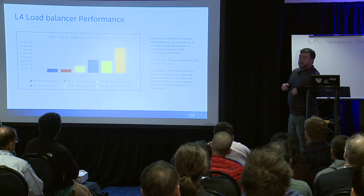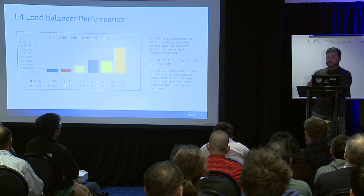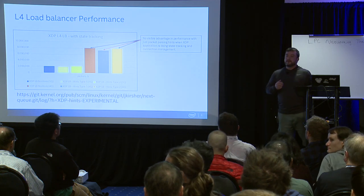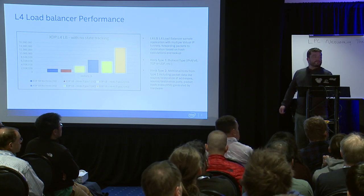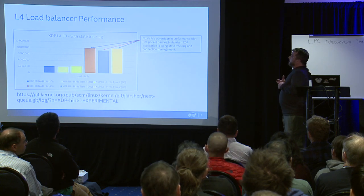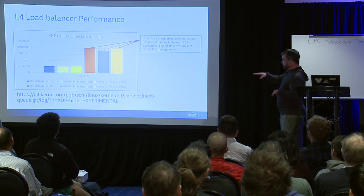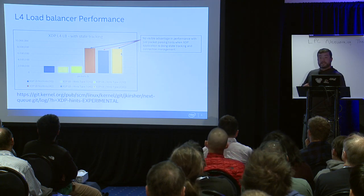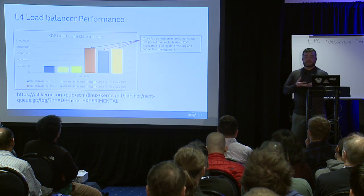Looking at the same setup with state tracking: we boiled it down to four queues on the last three bars. The no-hints bar and hints type 2 have the same exact performance. We were like... well, that's not exactly what we expected. There was a lot of head scratching. To clarify — these are straight TX actions, not redirects. The question was whether these are TX actions, and yes, they are TX.